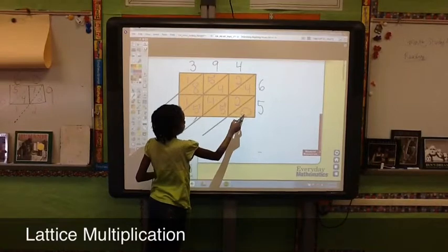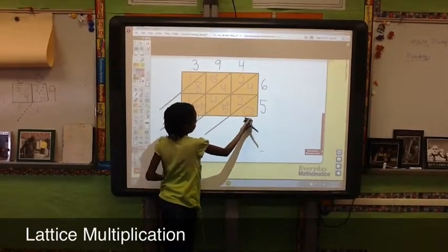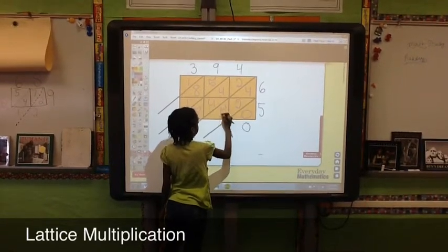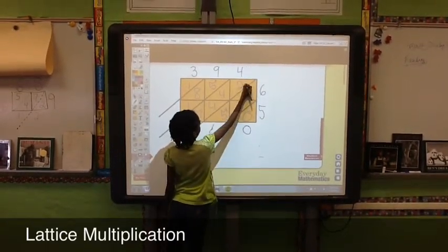Then you do 0 plus 0 equals 0. 4 plus 2 equals 6, plus 5 equals 11. Add the one up here.